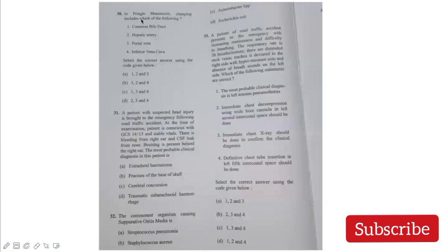In Pringle's maneuver, clamping includes CBD, hepatic artery, portal vein and IVC. Generally, we do not clamp IVC because that has severe consequences. So CBD, hepatic artery, and portal vein are compressed or clamped in Pringle's maneuver. A patient with suspected head injury is brought to emergency following RTA. At examination, his GCS is 14 with stable vitals. Bleeding from right ear and CSF leak from nose. Bruising is present behind the right ear. This is pointing out Battle's sign. Battle's sign is usually seen in base of skull fracture.